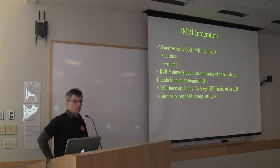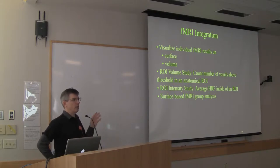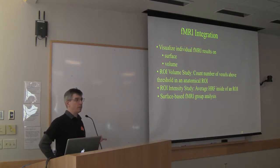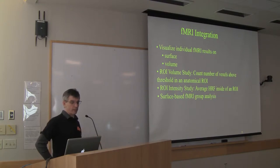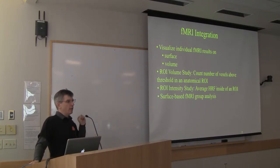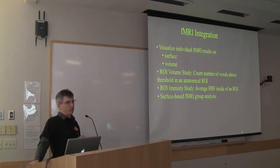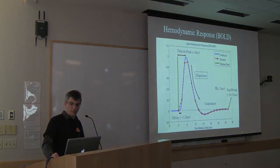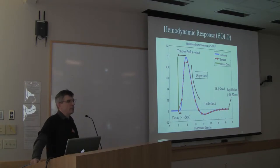This is the fMRI integration section. We've already been through the registration part — it's assumed you've done motion correction on your fMRI to the middle time point as your template, and you've already registered it. You want to take the results for the individual and view them on the volume, the anatomical, or on the surface. There are also ROI studies, and a surface-based group analysis. I don't have time to teach everything about fMRI analysis, so this is going to be a two- or three-slide crash course.